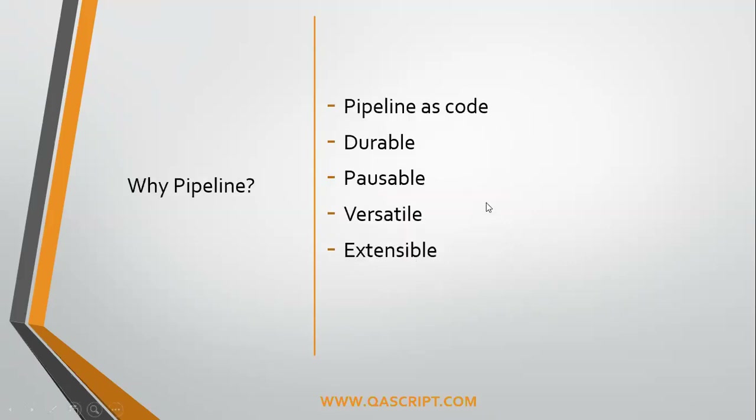Coming to why we should use a pipeline: we can easily use pipeline as code using the Jenkins file, and it's pretty durable because if by chance your Jenkins server goes down or it's broken, it doesn't affect your Jenkins pipelines. Also, you can pause your pipeline at any stage and ask for user input. This is pretty useful when you are building a continuous delivery pipeline and you want approvals before deploying to production. You can pause your Jenkins pipeline, get your approvals, and then continue to deploy to production.